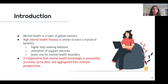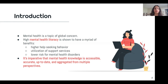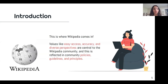With this in mind, it's really important that mental health knowledge is accessible, accurate, up-to-date, and coming from multiple perspectives. And this is where Wikipedia comes in, because values like easy access, accuracy, and diverse perspectives are central to the Wikipedia community.